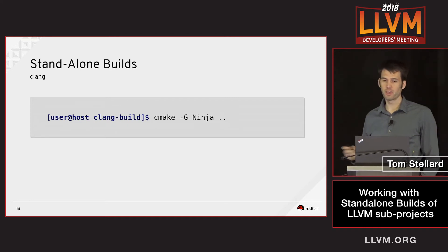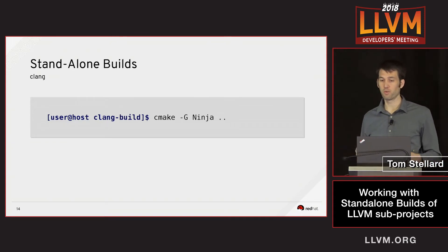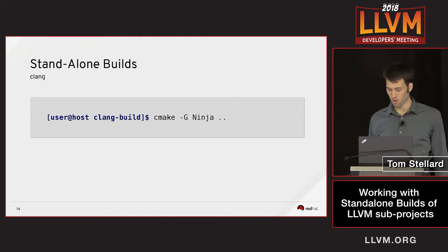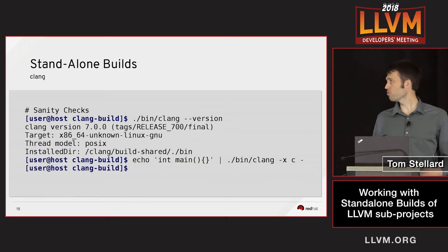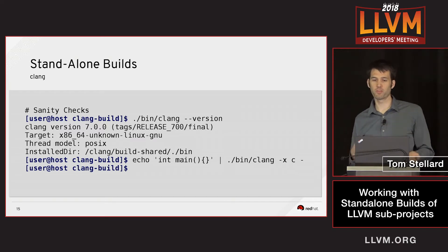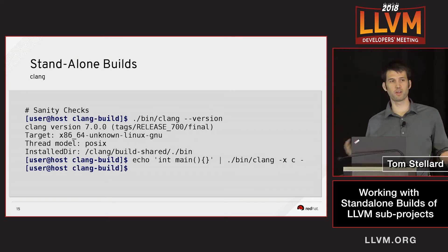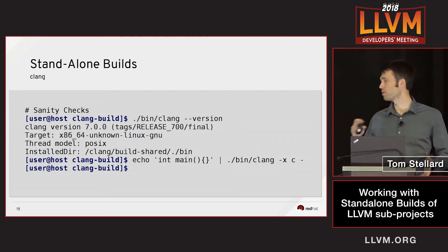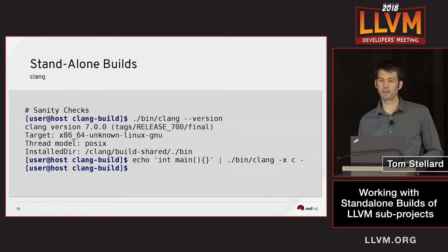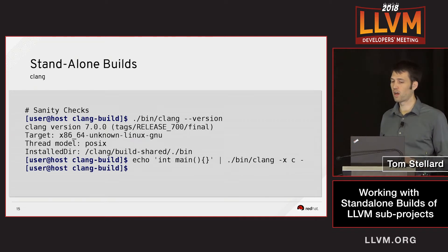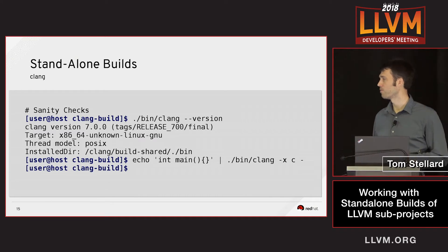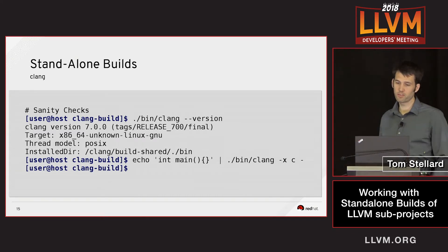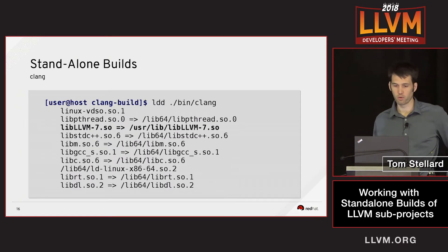Once we've done our LLVM build, we can get started building Clang. For standalone builds, we don't really need any extra configuration — we can just use the default configuration for Clang and it will work. After a build, I like to do some simple sanity checks. First, I ask Clang to print its version, which tests that all the linking happened correctly with no mix between shared and static objects or duplicated symbols that might cause a crash. Then I try to compile a simple program to make sure more of the functionality is working. With this simple configuration, it passes all our sanity checks.